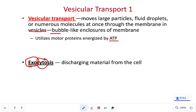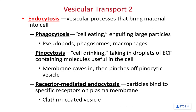Exocytosis gets stuff out of cells. Endocytosis — endo for in, cyto for cell — brings things into the cell, and there are different ways: phagocytosis, pinocytosis, or receptor-mediated endocytosis.